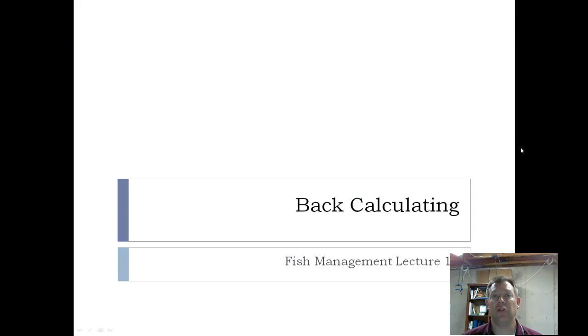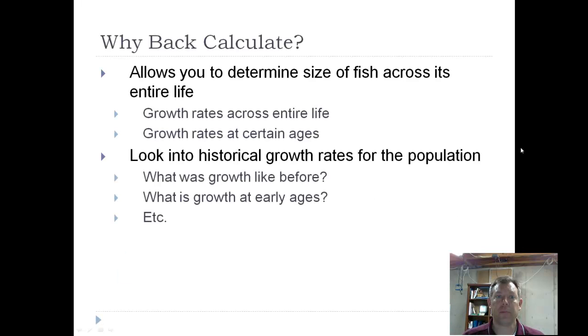This is basically taking an image of your spine or scale or otolith and using the data from that image to find out how big a fish was at each stage in its life. So each time it laid down an annulus, you can estimate how big that fish was. And this is a very nice feature that you can do with your aging structure.